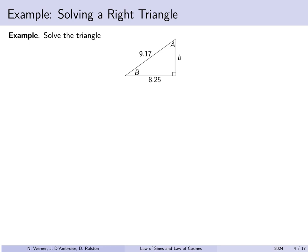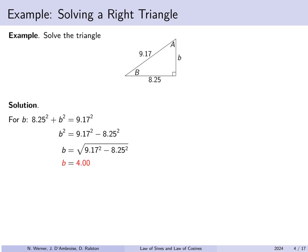Let's solve this triangle. Here we are not given any angle other than the right angle, but we are given two different sides. We can find the third side thanks to the Pythagorean theorem. The length 8.25 squared plus the unknown b squared must equal the hypotenuse of 9.17 squared. We can solve this for the unknown length b. Theoretically b would be plus or minus this square root, but because it is a length in a triangle we choose the positive square root, and this gives us 4.